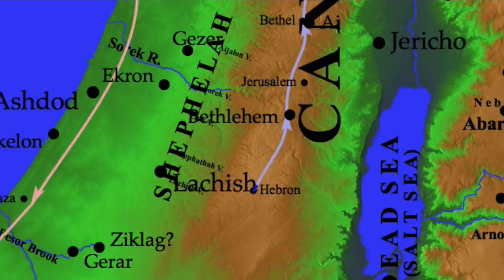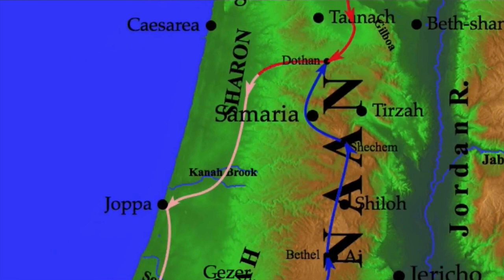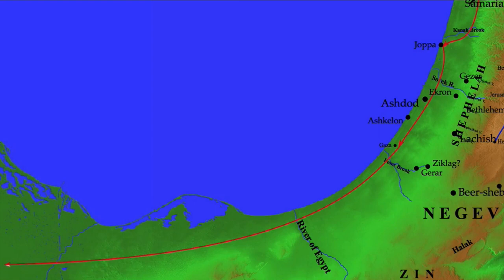Looking at a map: they were in Hebron. They took Joseph up to a town called Dothan, where he was picked up by the Midianite traders and taken down through Samaria and various places — a lot of these names aren't relevant yet — and ultimately down into Egypt.